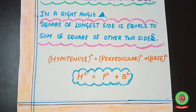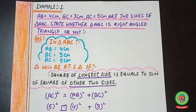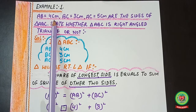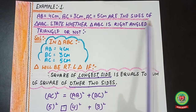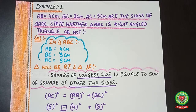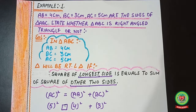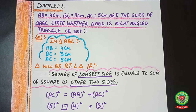This converse is our new topic for today. Let's move to example number one. The statement is: AB = 4 cm, BC = 3 cm, AC = 5 cm are the sides of triangle ABC. We need to find whether triangle ABC is a right angle triangle or not.